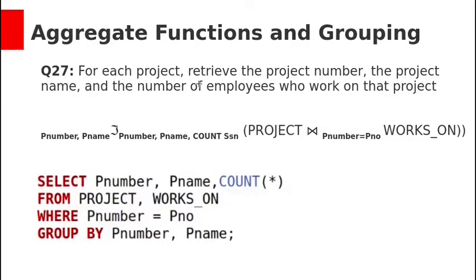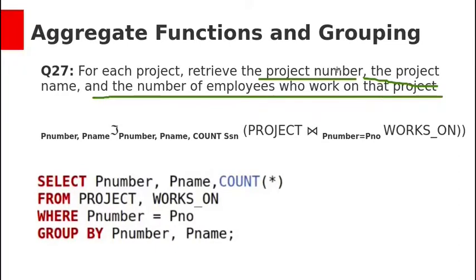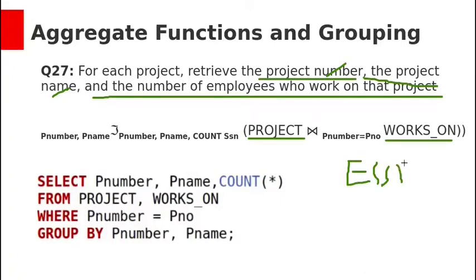For each project, retrieve the project number, project name, and number of employees who work on that project. You need the project table for project number and name, and the works_on table to count employees (via ESSN). You need to join these two tables. After joining project and works_on, retrieve P_number, P_name, and count(ESSN) as number of employees, grouping by project number and project name.